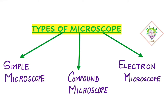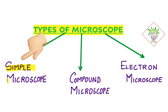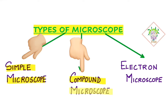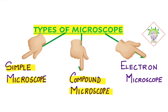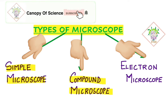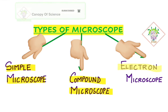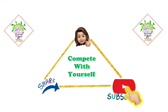Now, what are the different types of microscope? Number one: simple microscope. Second: compound microscope. And thirdly, which is the most powerful microscope of all, is called the electron microscope. We will read in detail about these three types of microscope in the coming videos.